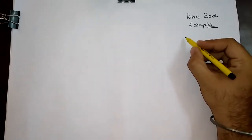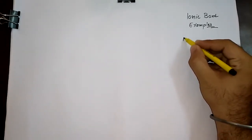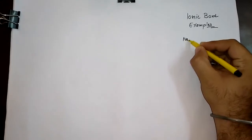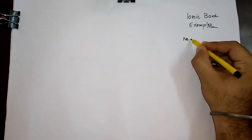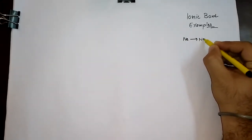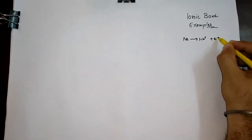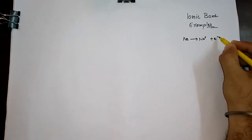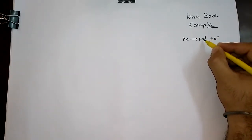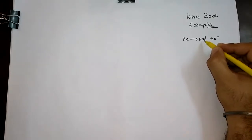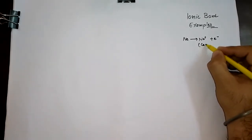During this whole process, when an atom loses its electron, it forms an ion and we call this ion a cation.